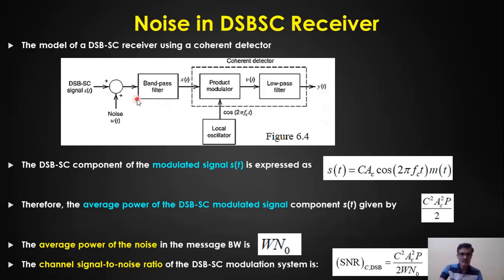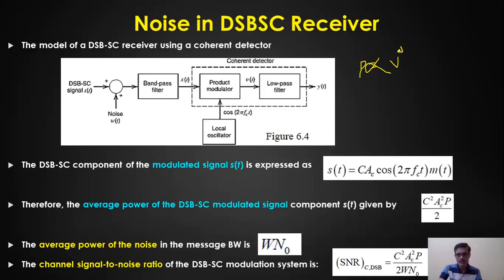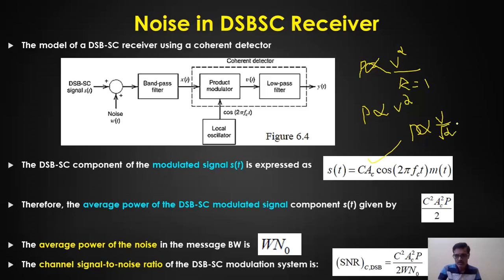Starting with the channel: the average power of s(t). Power is proportional to V²/2 for a sinusoidal signal (with R = 1 normalized). The amplitude of the DSB-SC carrier is c·Ac·m(t), so as m changes the amplitude changes. Using the power formula, the average power becomes c²·Ac²/2 multiplied by the power P of the message signal.